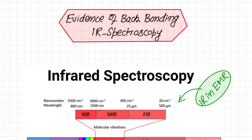In order to have information about whether there exists backbonding in a particular metal carbonyl or not, we will use IR spectroscopy or infrared spectroscopy. This is also called vibrational spectroscopy.